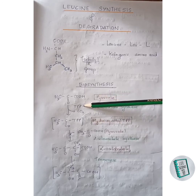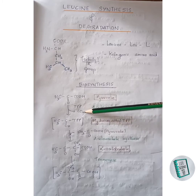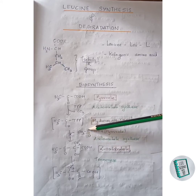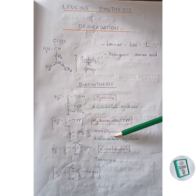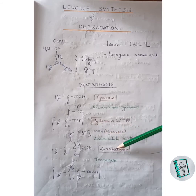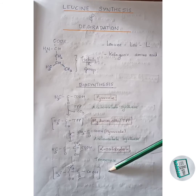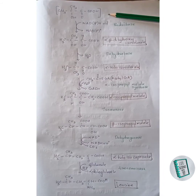Pyruvate forms an adduct with TPP and upon decarboxylation forms a hydroxyethyl-TPP intermediate. This hydroxyethyl-TPP joins with the keto group of another pyruvate in the presence of acetolactate synthase to form alpha-acetolactate. This alpha-acetolactate then undergoes isomerization in the presence of isomerase enzyme to form an intermediate, which then undergoes reduction in the presence of reductase enzyme.